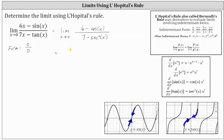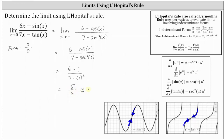The limit is equal to 6 minus cosine 0 divided by 7 minus secant squared 0. Cosine 0 is equal to 1, and so is secant 0, giving us the quantity 6 minus 1 divided by the quantity 7 minus the square of 1, which is equal to 5/6. And as a decimal rounded to four decimal places, 5/6 is approximately 0.8333.